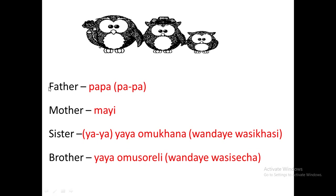When we come to father, we call father 'papa' in Bukusu. 'Papa' is pronounced with a pause between the syllables — we have 'pa' and 'pa', so it's 'papa'. Although it looks like a quick word, in the Bukusu language it's pronounced as a smooth transition from one syllable to another, so it's 'papa'. For mother, we call the mother 'myi myi'.